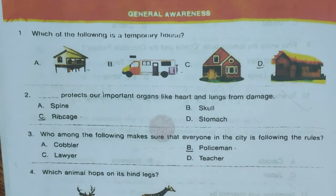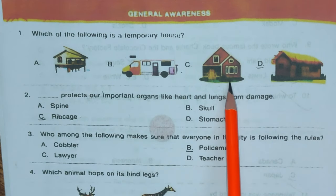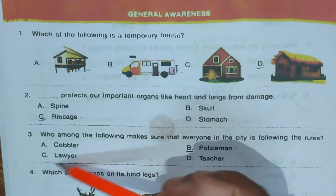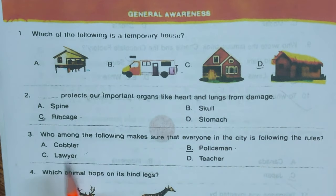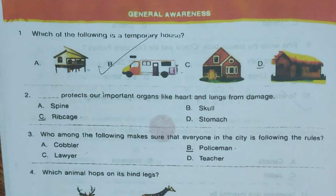Let's quickly jump to the General Awareness section. Question 1: Which of the following is a temporary house? Options are: A) stilt house, B) caravan, C) a normal house, D) a hut. The correct answer is B, caravan. Question 2: Dash protects our important organs like heart and lungs from damage. Options are: A) spine, B) skull, C) ribcage, D) stomach.